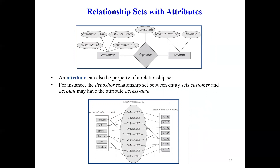An attribute can also be a property of a relationship set. For example, in the relationship set between customer and account, the depositor relationship may have an attribute called access date — recording when a particular customer last accessed their account. So we can assign attributes to relationship sets as well.